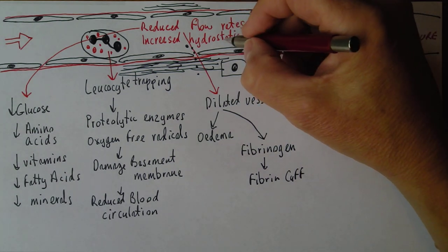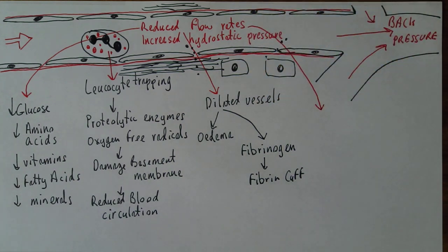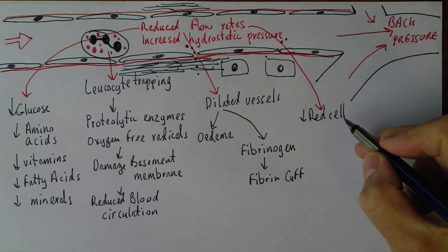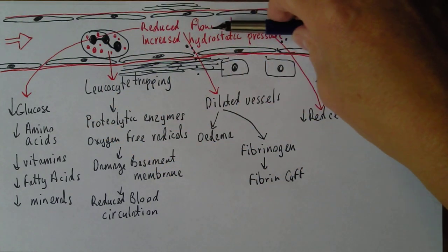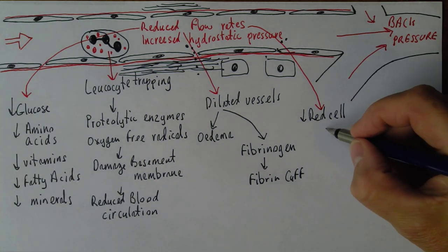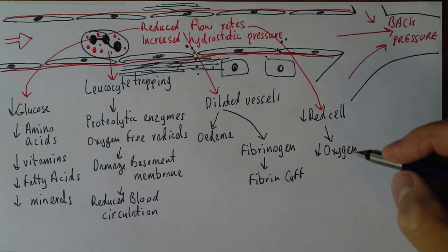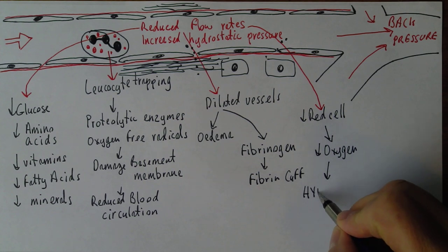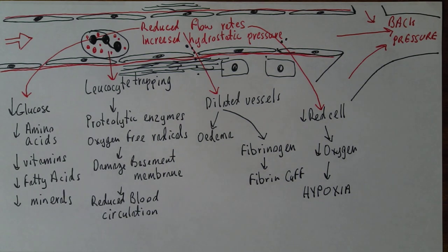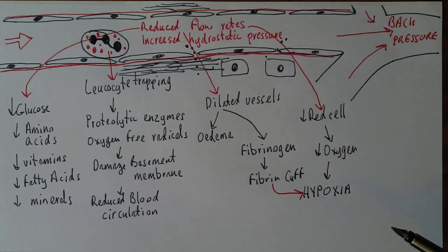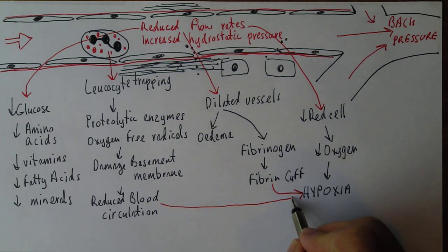Because there are reduced flow rates, we're also going to get reduced red cell passage through the capillary — fewer red cells flowing through. Since it's the red cells that carry oxygen, this means reduced amounts of oxygen delivered to the tissue cells — a condition called hypoxia, meaning lack of oxygen at the level of the tissues. The fibrin cuff contributes to the hypoxia by forming a physical barrier, and the reduced circulation contributes through the reduced numbers of red cells.